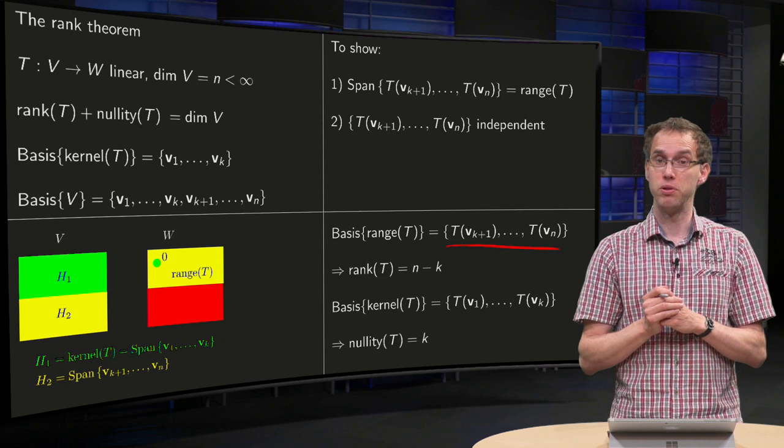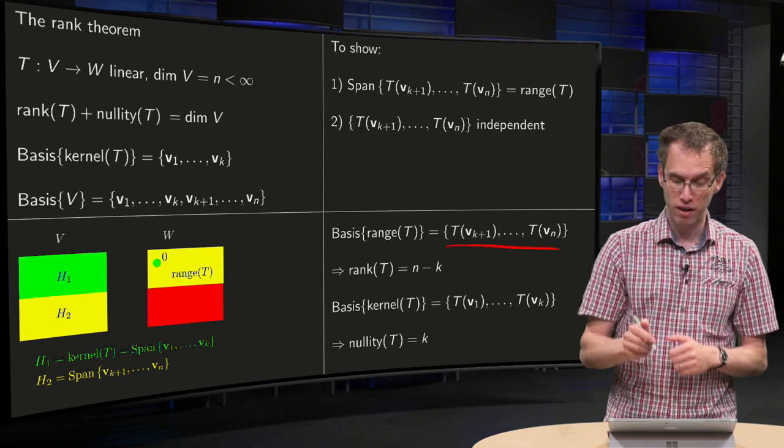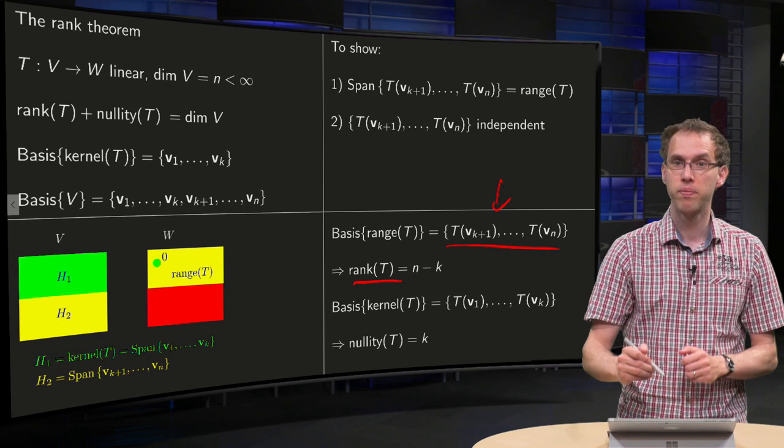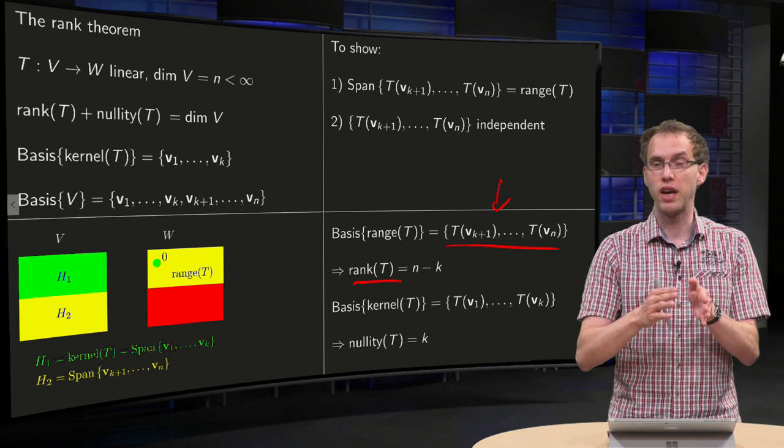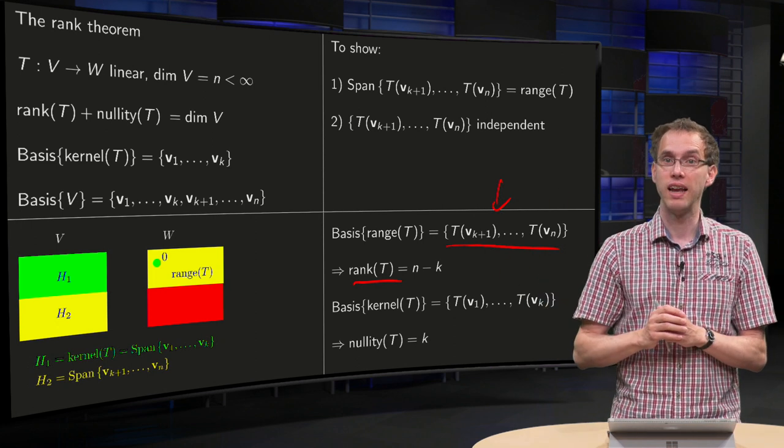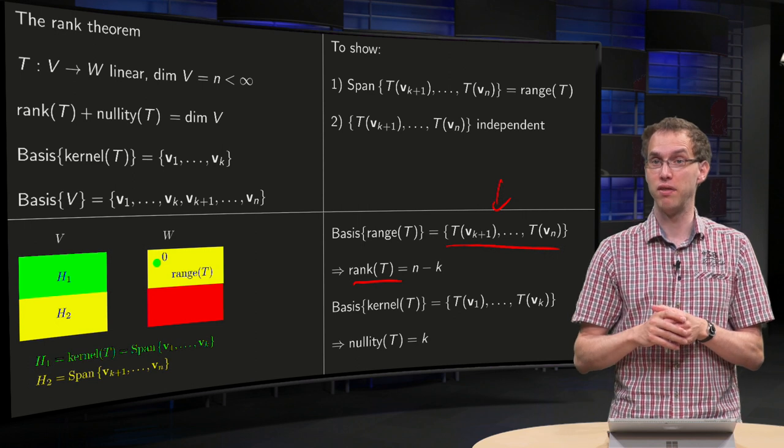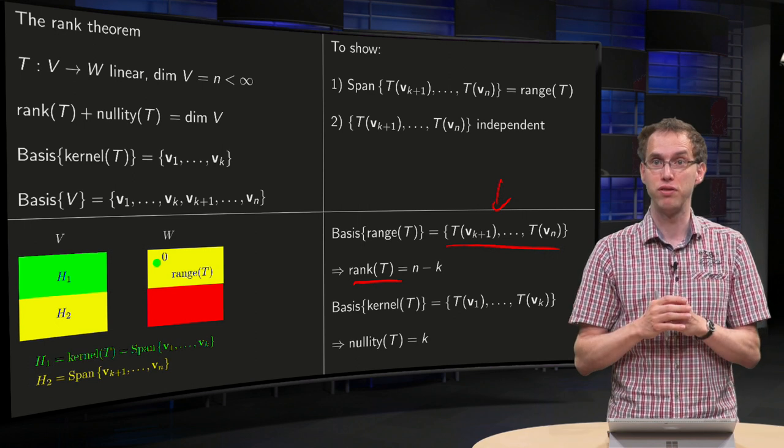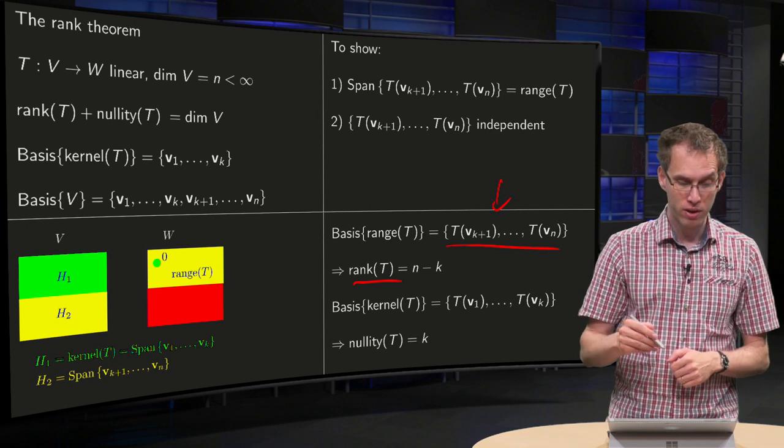So, you can compute the dimension then, the rank of T, that's the number of vectors over there. Well, you start at k plus 1 and you end at n, that means that you have n minus k vectors over there, so the rank of T will be n minus k.